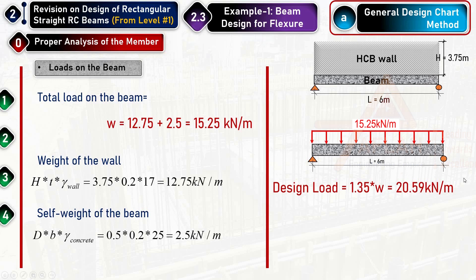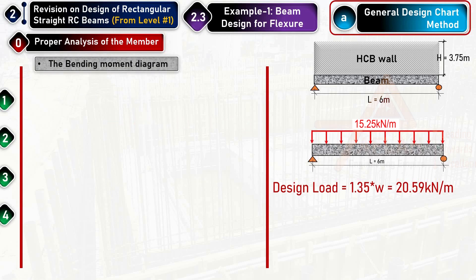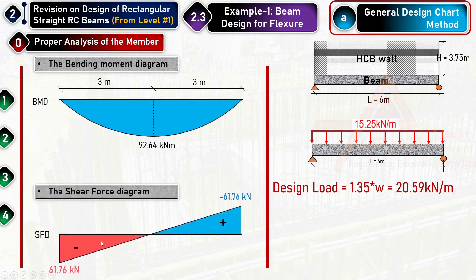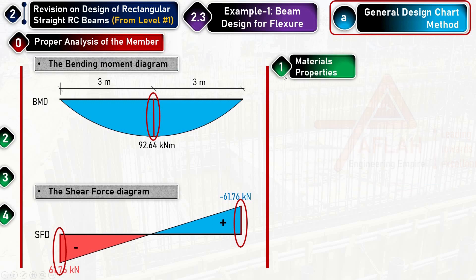The bending moment diagram gives a maximum positive bending moment of 92.64 kNm, calculated using wL²/8 for a simply supported beam. The shear force diagram gives ±61.76 kN, calculated as the design load × L/2. The main reinforcement will be at the bottom, with stirrups maximum near supports and minimum at midspan.